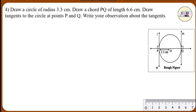Segment OP is perpendicular to line L, since a tangent is perpendicular to the radius. Similarly, segment OQ is perpendicular to line M. The perpendiculars to segment OP and segment OQ can be constructed at points P and Q respectively, giving the required tangents. Also, the radius is 3.3 cm and chord PQ is 6.6 cm, which is twice 3.3 cm. Therefore, chord PQ is the diameter of the circle.